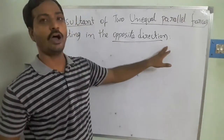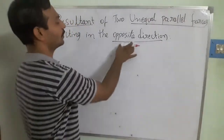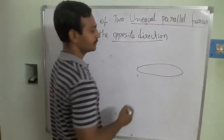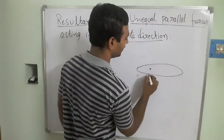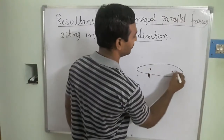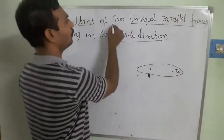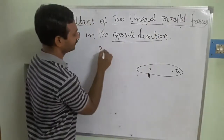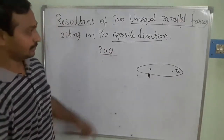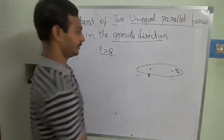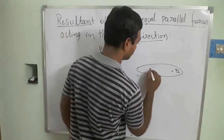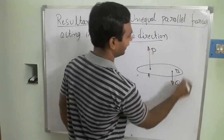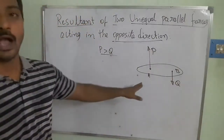I am going to represent this graphically. I am taking point A and point B. We need to consider two parallel forces unequal in magnitude, where P is greater than Q. They are in opposite directions — force P is acting upward and Q is acting downward.